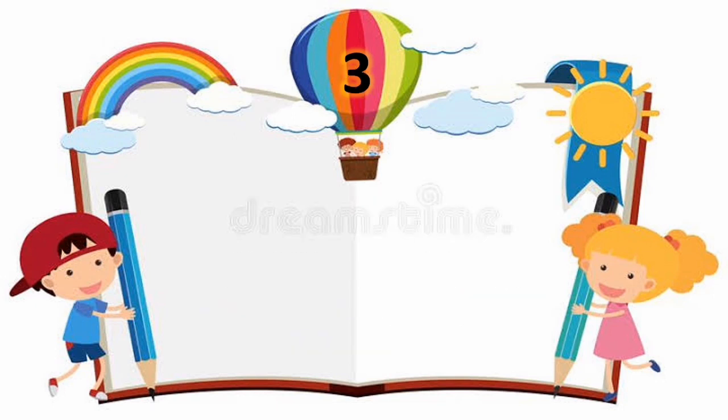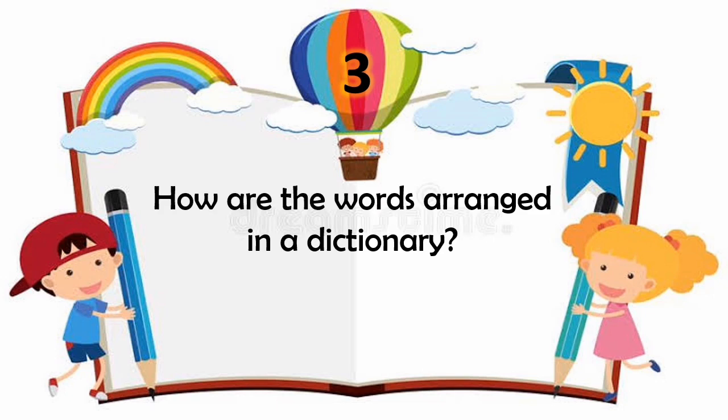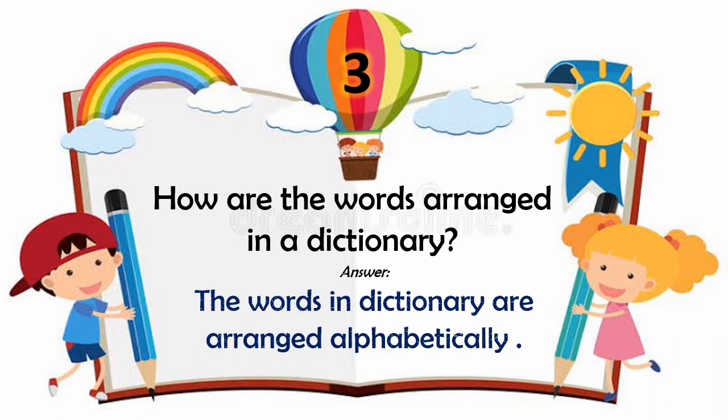Question number three. How are the words arranged in a dictionary? The words in a dictionary are arranged alphabetically.